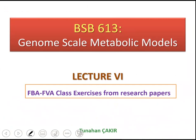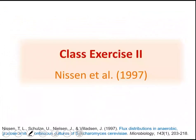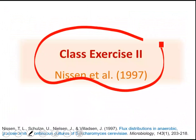Now we will do our class exercise on Nissen et al 1997. I had already briefly talked about this when I was doing an overview of examples of metabolic network-based flux predictions from the 90s. The paper was published in 1997, a paper by Jens Nissen's group, and it is on anaerobic Saccharomyces cerevisiae.